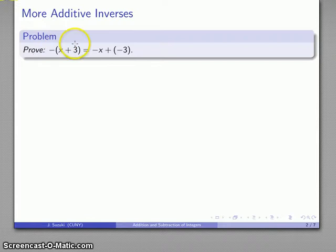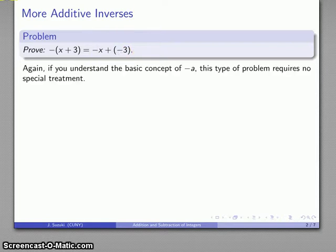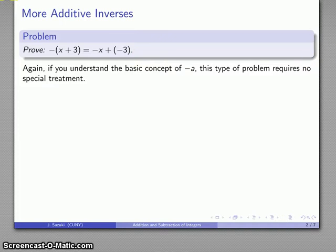In this case, we want to prove that the negative of quantity x plus 3 is the same thing as negative x plus negative 3. This might seem to be an algebra problem, but with an understanding of what the basic idea of the additive inverse is, this requires no special treatment. As soon as you understand what this means, this is just an extension.